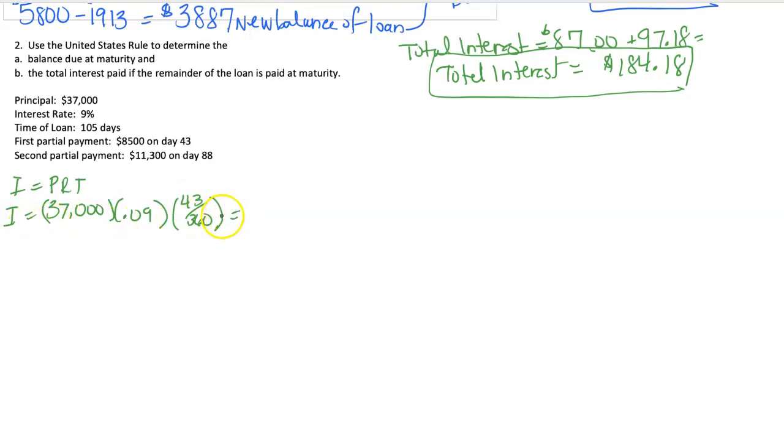And our time is going to be the 43 days out of 360 days in a year. Calculating all this together, I get an interest rate, or excuse me, an interest amount of $397.75.